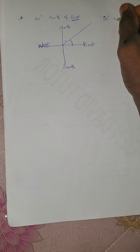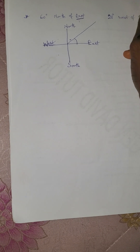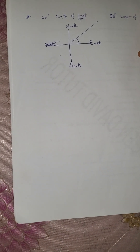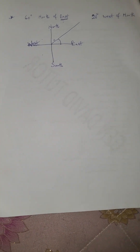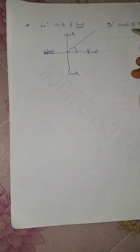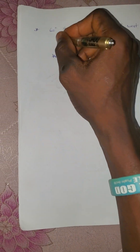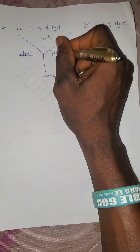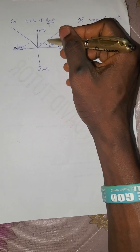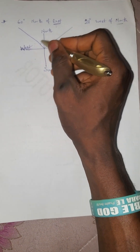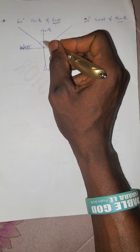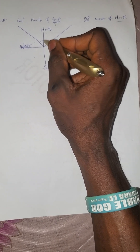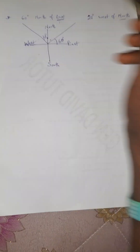For '20 degree west of north,' the line is between west and north. The angle ends at the last word, which is north. So the 20 degrees is measured here, because it is west of north — it must end at the north line. That's why we have 20 degrees here.